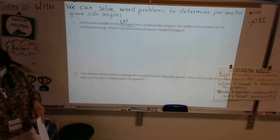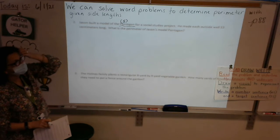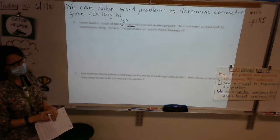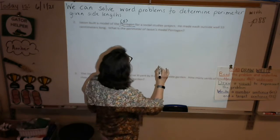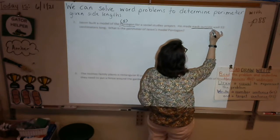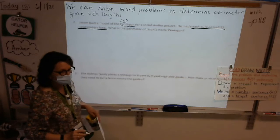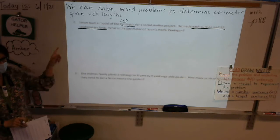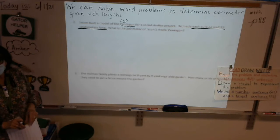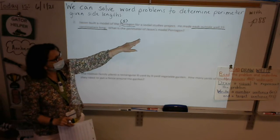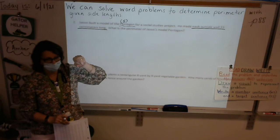What else is in there that's going to be important, Kayden, besides he built a model of a Pentagon? Okay, each outside wall is 33 centimeters long. So make sure you're underlining that, Kayden, in your word problem. And then what is our unknown? Our unknown is the question that says, what is the perimeter of Jason's model Pentagon? So we have to find the border, the outline, the boundary of the shape.